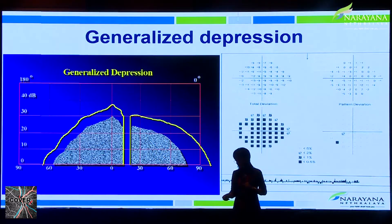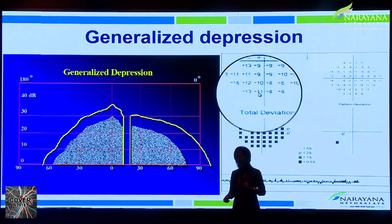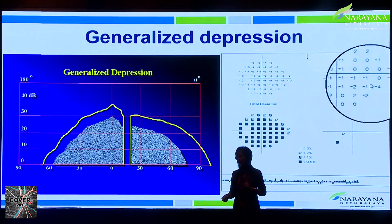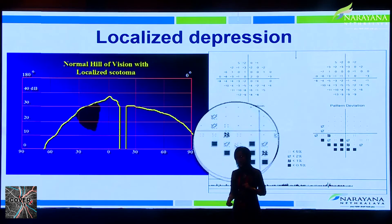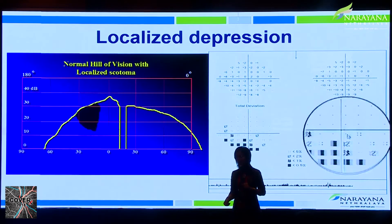The pattern deviation plot reveals focal defects after adjusting for overall depression or elevation of the hill of vision. The machine takes the seventh best point, deducts it from the total deviation plot, and gives the number and grayscale representing localized scotoma. A normal field shows both total and pattern deviation plots as normal. Generalized depression shows many abnormalities on total deviation but a relatively normal pattern deviation plot. A localized scotoma appears similarly on both plots.